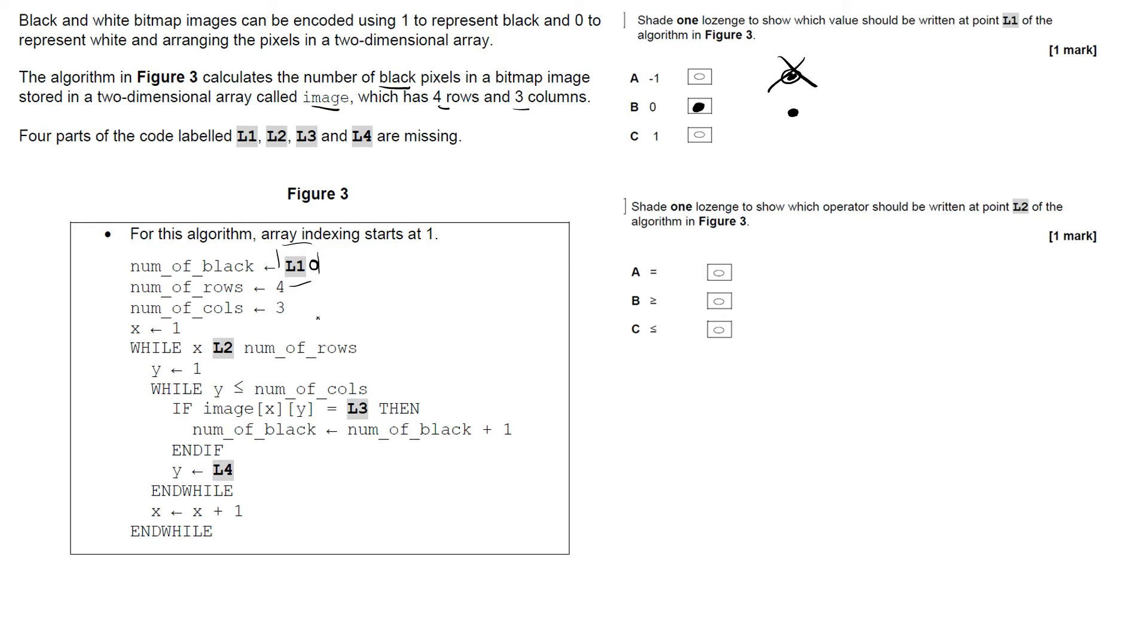So L2 could be any of those. Now we've got to look at this really carefully. We've got while x—now x is set to 1 in the first iteration—number_of_rows. So it's going to be equals number_of_rows, more than or equal to, less than or equal to.